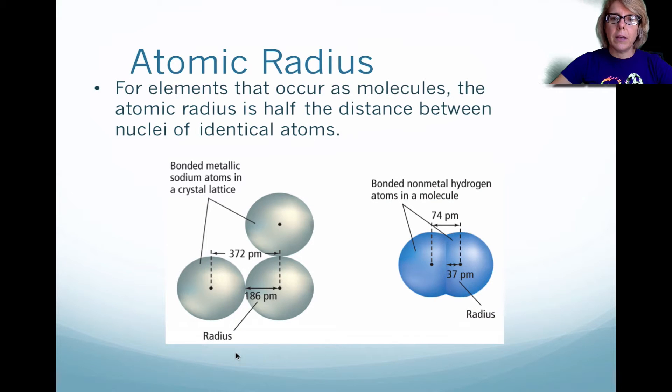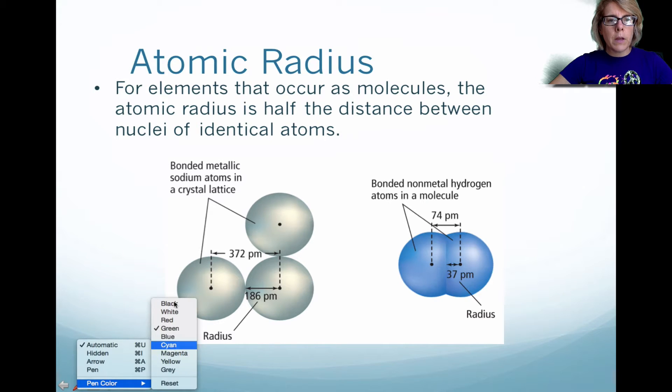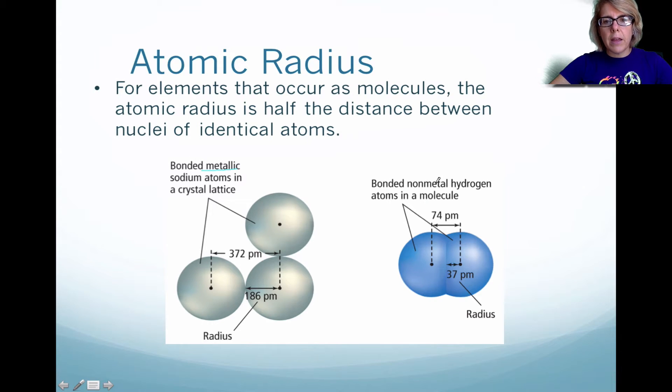Atomic radius. How do you measure it? Well, when you have elements that occur as molecules, you look at half the distance between the nuclei when we're looking at identical atoms. I just want to point out here with this picture below, there's actually two types of atoms: metallic and non-metal. Notice with the metallic, they don't necessarily overlap, but they are almost atom to atom. As a result, we look at half the distance between the nuclei. And here with the non-metal, we do have overlapping atoms, and as a result, we look at half the distance between those nuclei.